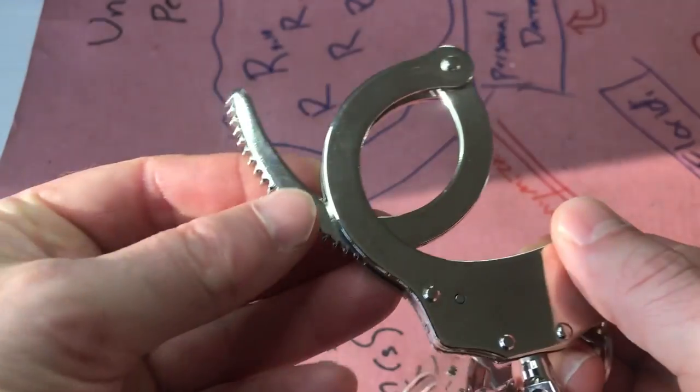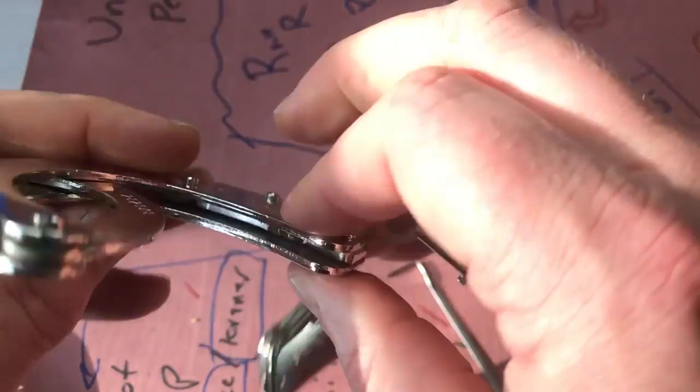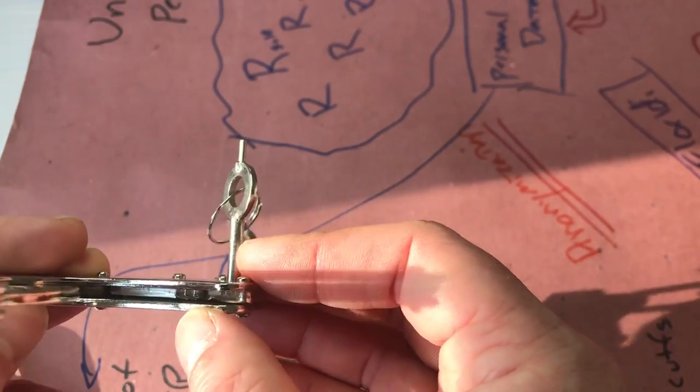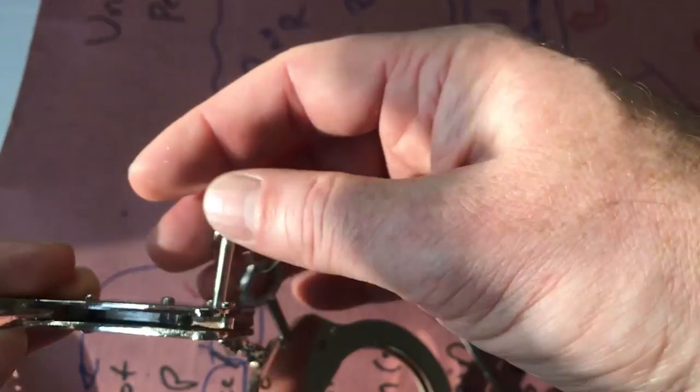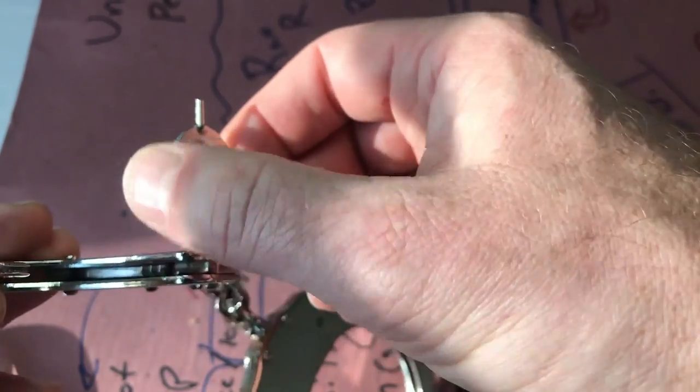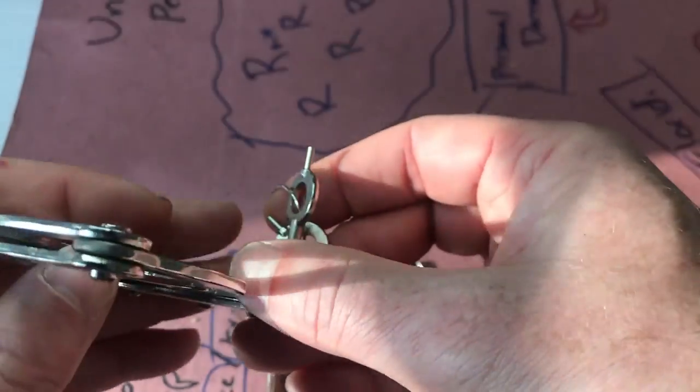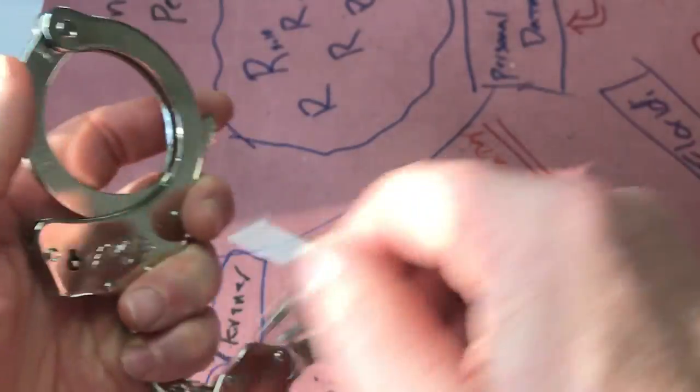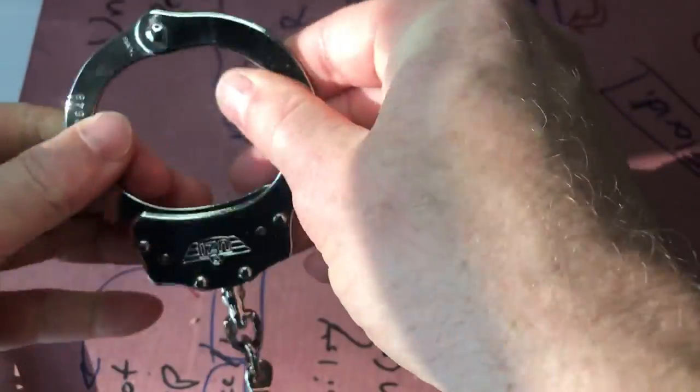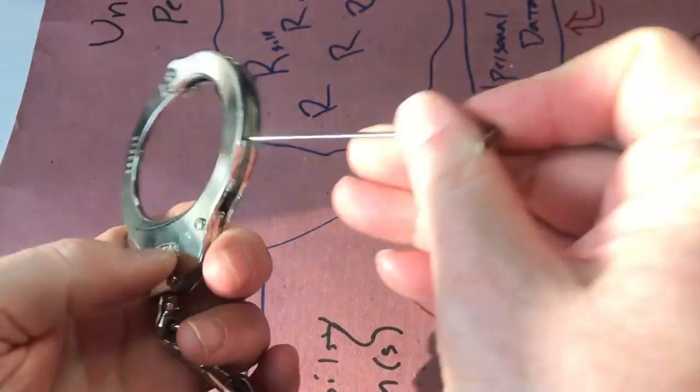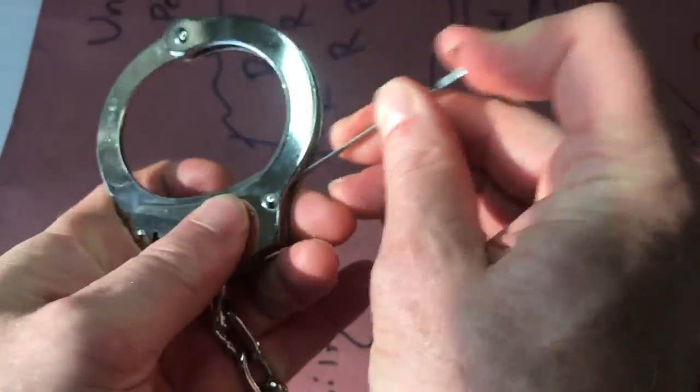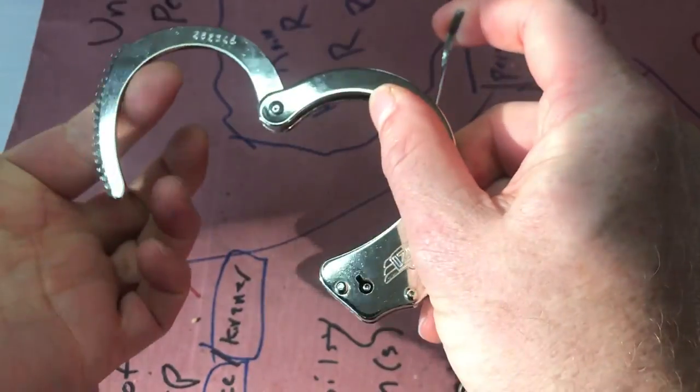So let's talk first about how the handcuffs work. There's a serrated guy there. There's another serrated thing right there. It's a little hard to see because of the light. There we go. And when you turn the key, it just moves that guy out of the way and lets this go through. So in order to open this without a key, it's locked. You just take something flat and you push down that little serrated guy on the inside and there you are.